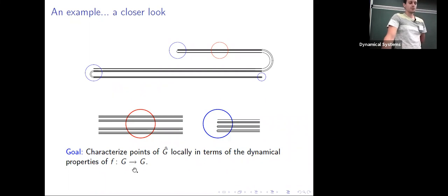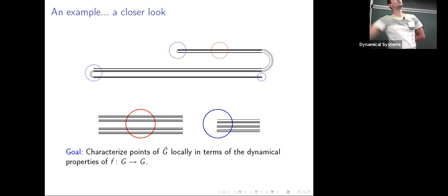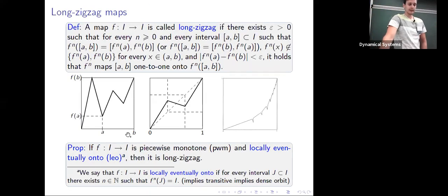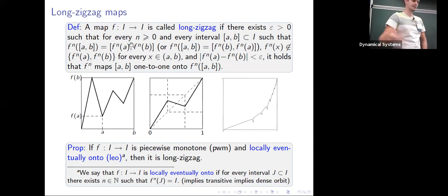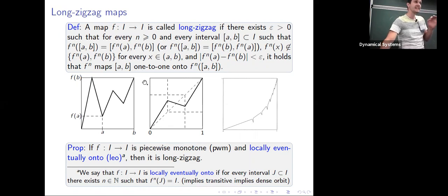Our goal is to characterize points locally in terms of the dynamical properties of the map f on the graph. We understand dynamics on graphs and intervals pretty well and want to use this to say something about points in these attractors. One part of the study: the notion of a long zigzag map plays a pretty crucial role. Intuitively, a map is long zigzag if every zigzag does not decrease in diameter to zero under iteration.